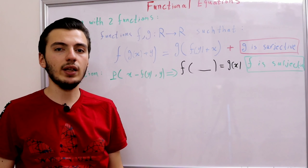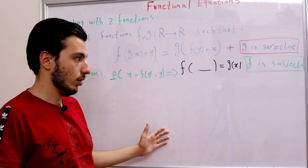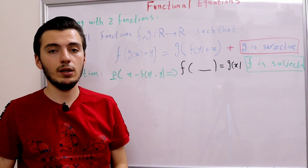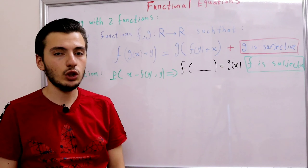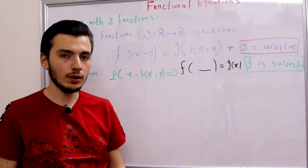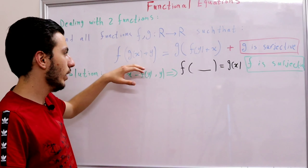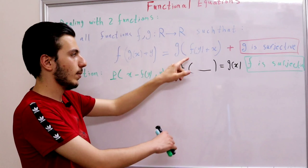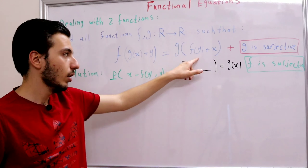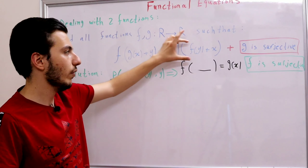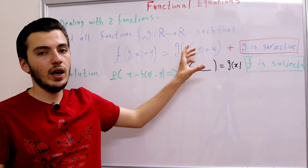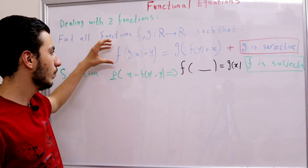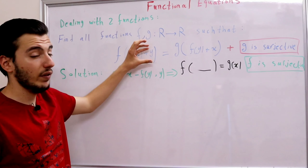Now let's use the surjectivity of f. The most common trick is to pick a magical value α such that f(α) = 0. We can use this by substituting y with α in the original equation — this will make f(y) = 0, simplifying the right-hand side to g(x). So we get: f(g(x) + α) = g(x).